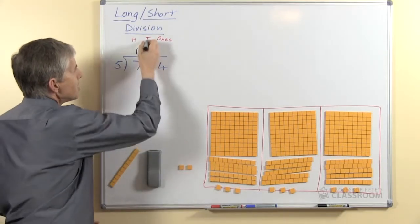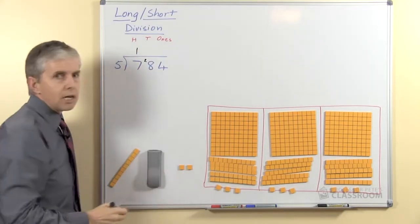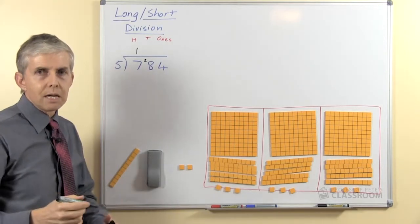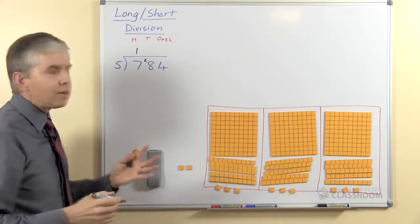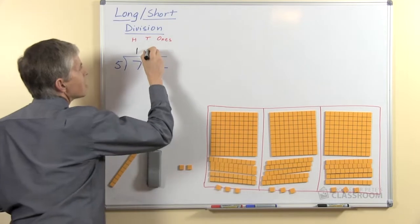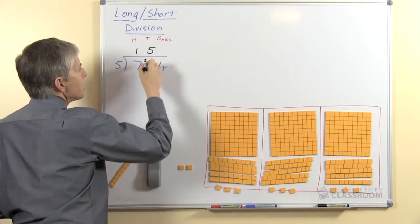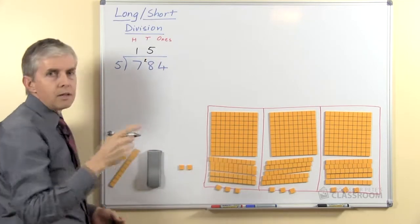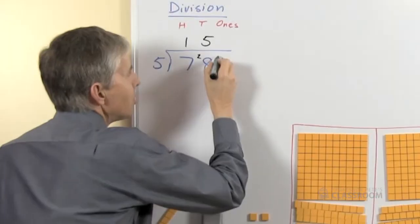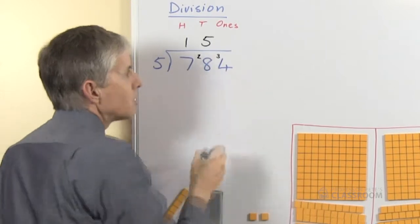Now we look at 28, this is tens, 28 tens shared among 5. Think of your 5 times table, 5 fives are 25, which is less than that so we can have 5 here, everybody gets 5 tens. 5 fives are 25, there will be 3 left. So again we put a little number, we put a 3 next to the 4.